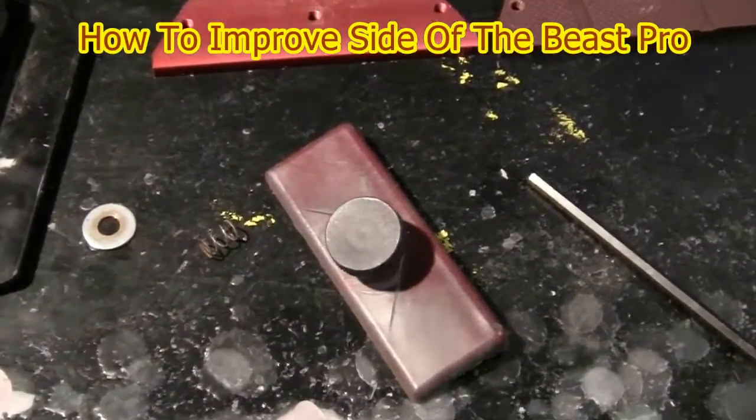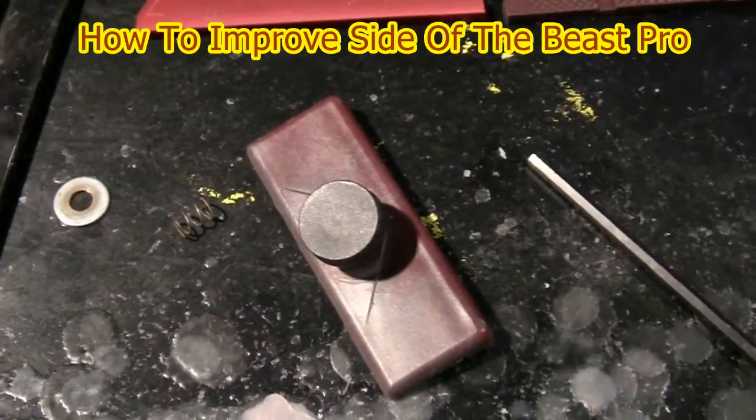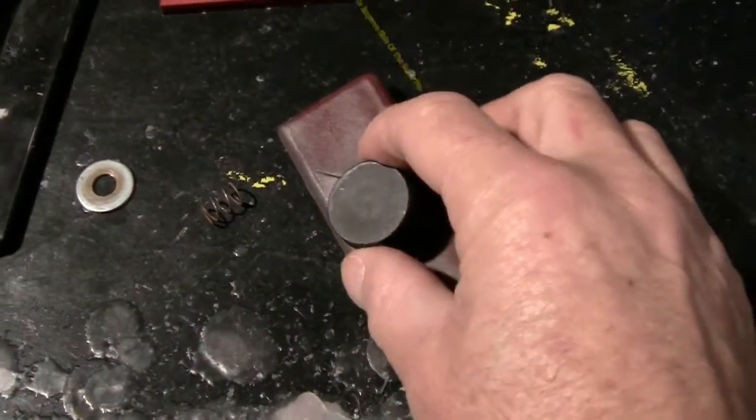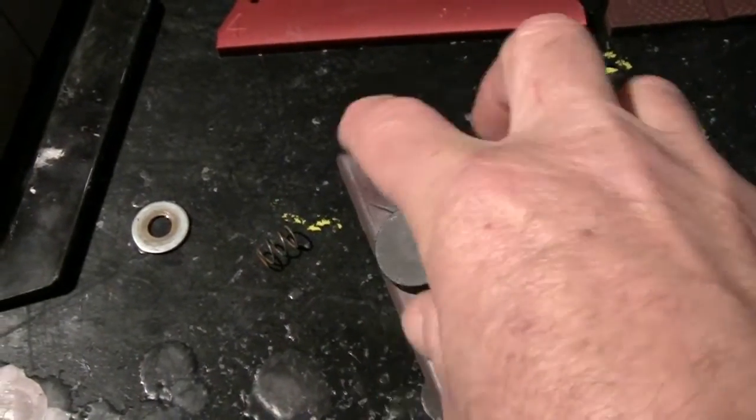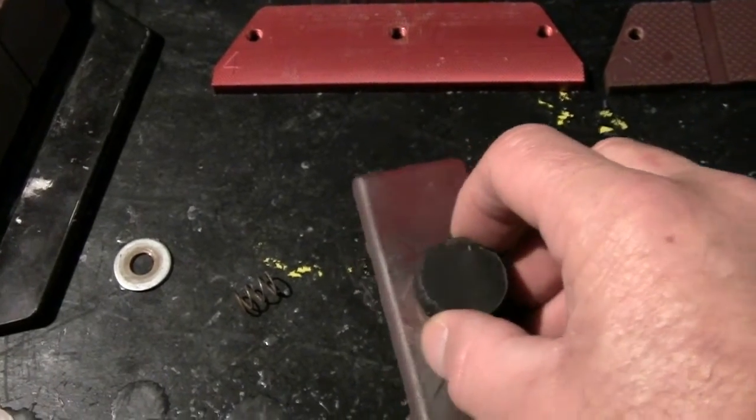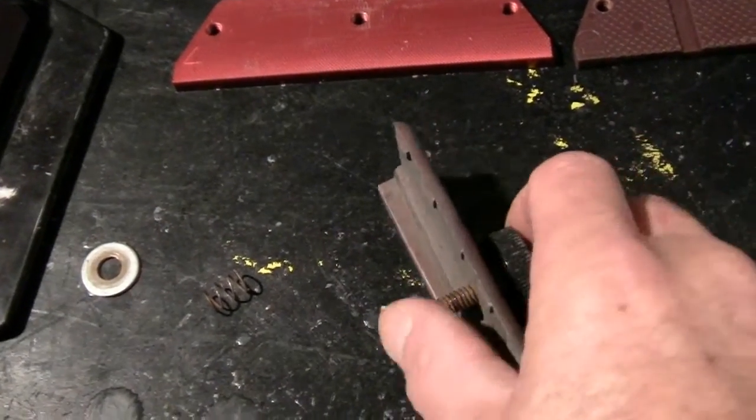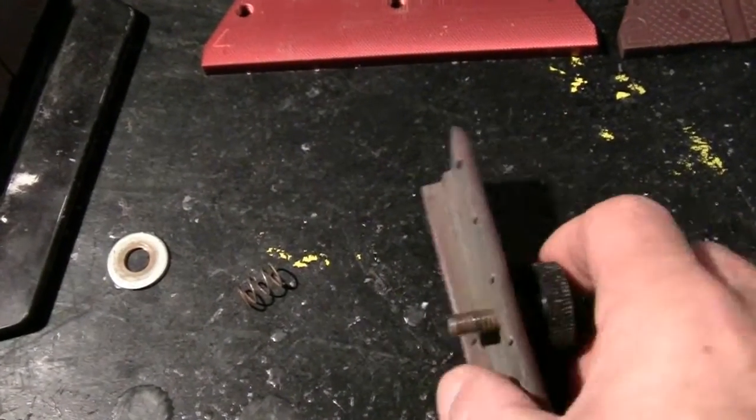Okay, so this is what I did to my Side of the Beast Pro. When you get it, it has a knob right here and this knob is how you tighten it down. Unless you've got really strong hands, it's hard to get it tight enough with this knob.